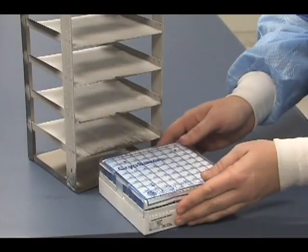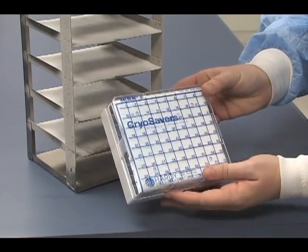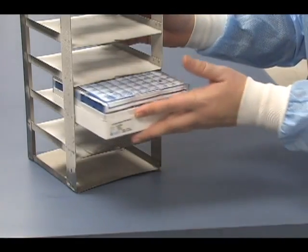The 81 vial box is designed to fit into a standard size stainless steel rack for your freezer.